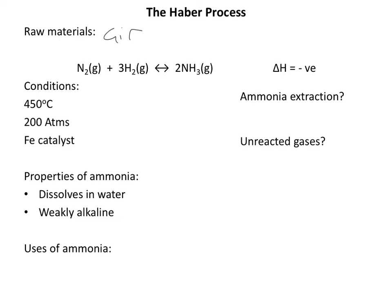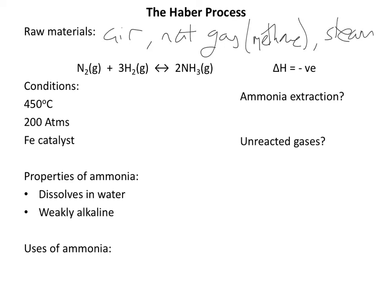Hydrogen is a little bit trickier to get hold of, but it's there in abundance in water and it's also found in methane or natural gas. We get the hydrogen by reacting natural gas — methane — with steam. So our three raw materials are natural gas, which contains methane, and steam or water. Natural gas and steam react together to give us the hydrogen.